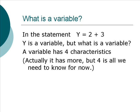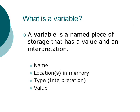In higher-level languages, one of the central concepts is a thing called a variable. In the statement Y is equal to 2 plus 3, Y is a variable — but what is a variable? A variable has four characteristics (actually more, but four is all we need for now). A variable is a named piece of storage that has a value and an interpretation. The four things are: it has a name, which is a sequence of characters that identify it; it has a location in memory; it has a type or an interpretation; and it has a value. The value is just a set of ones and zeros — we call that contents — but the actual value is dependent upon the type, or how you interpret that sequence of ones and zeros.